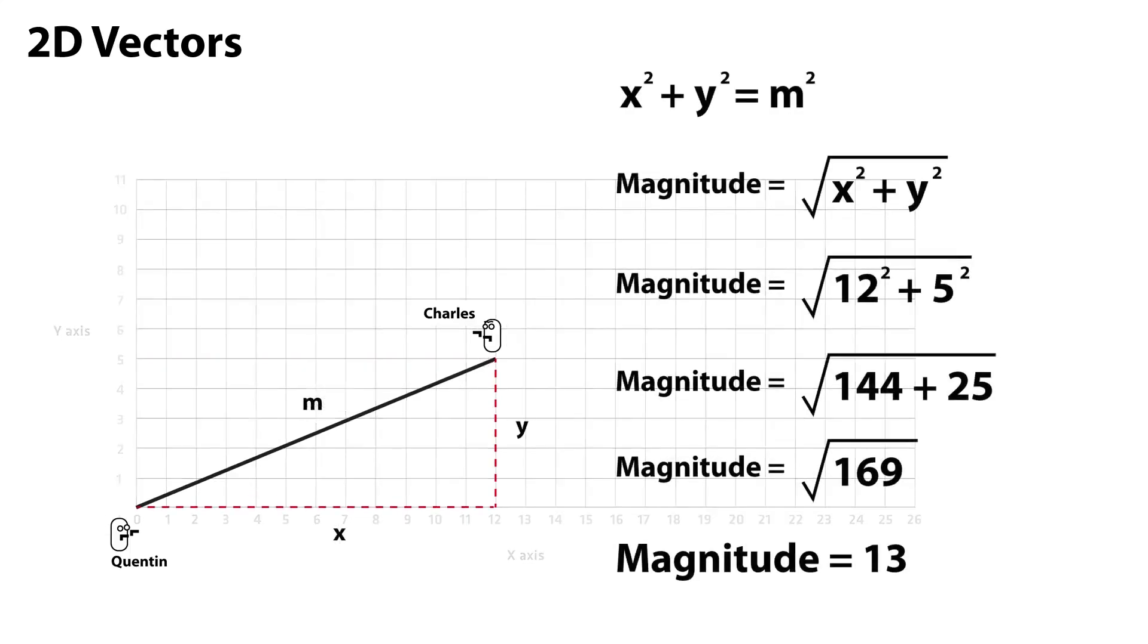Let's find out. As you can see the magnitude is the square root of the sum of the x and y positions on the grid squared, which when added together makes 169. The square root of 169 is 13, so Charles and Quentin will be unable to shoot one another, which is excellent as violence has no place in this tutorial.